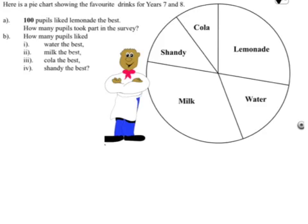In this pie chart, it's already been drawn for us. It's about the favourite drinks from year 7's and year 8's. In part A, we can see that we've already been told 100 pupils like lemonade best. So we know there are 100 pupils in this angle.